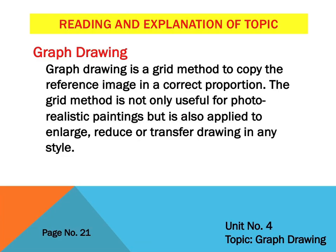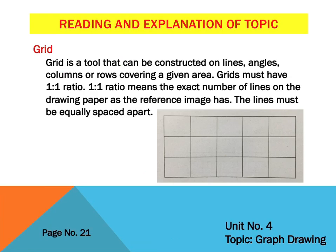Grid is a tool that can be constructed on lines, angles, columns, or rows covering a given area. Grid must have a 1:1 ratio — meaning the exact number of lines on the drawing paper as the reference image has. The lines must be equally spaced apart. Aapne bilkul exact number ka ratio rakhna hai aur drawing paper pe reference image ke upar equally space dekar graph banana hai.